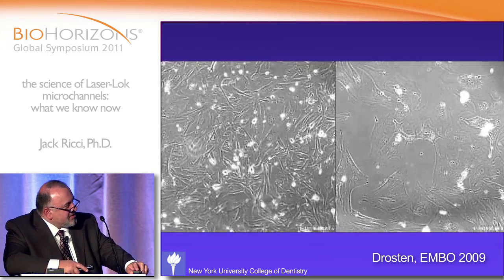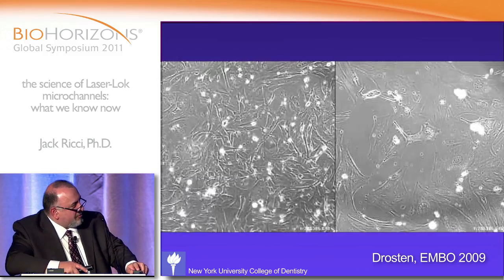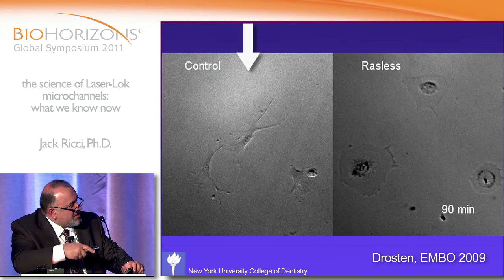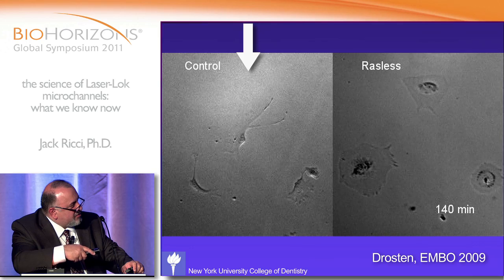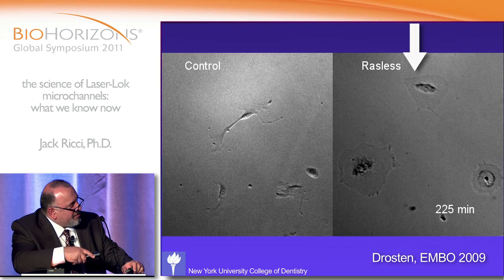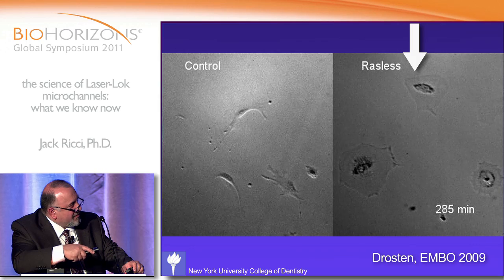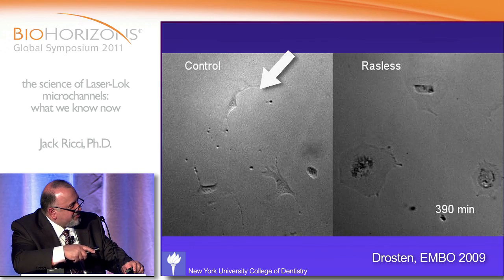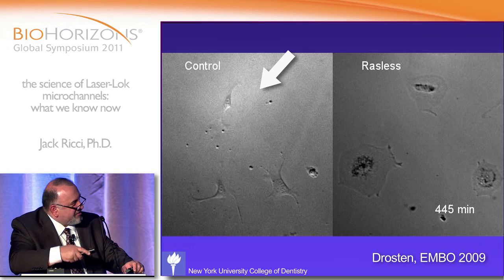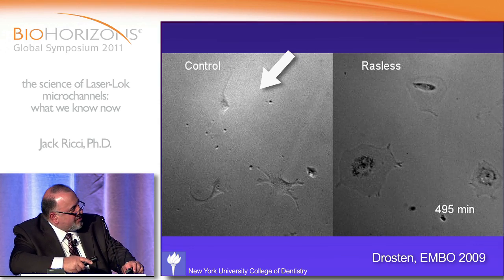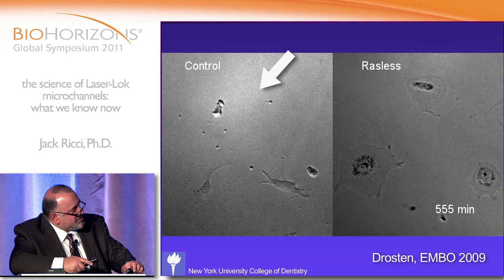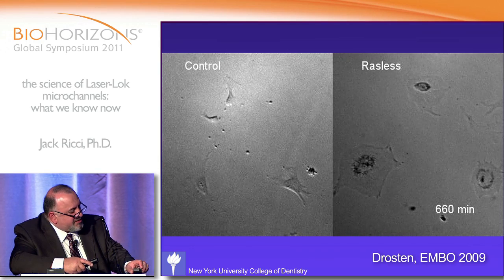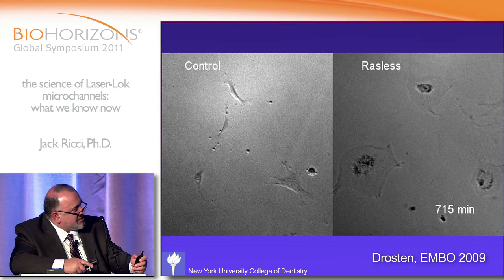If you look at cells on an individual level, you can see these cells are migrating and they're sort of doing a random walk. These cells are not migrating at all because they've had the Rac knocked out of them. Essentially this cell is going to undergo cell proliferation — you'll see it round up and split into two daughter cells, and the two cells migrate away. That's very typical cell behavior on a flat surface.